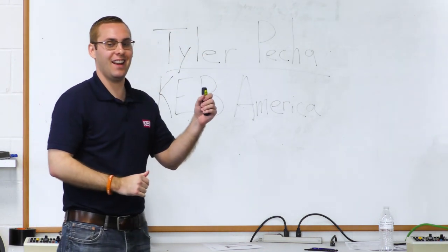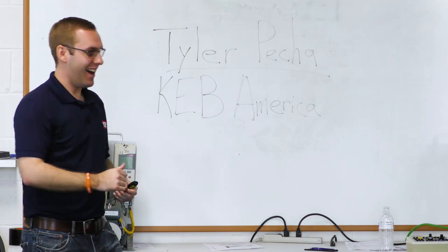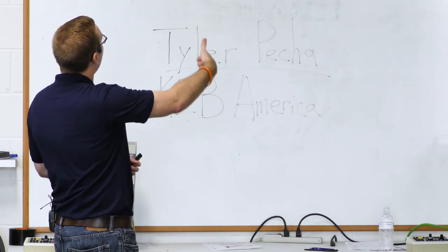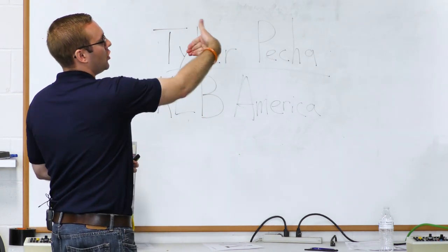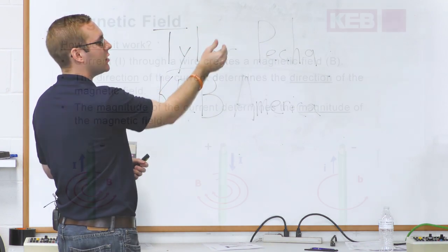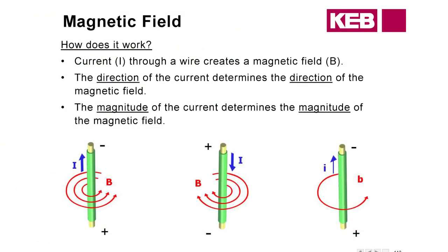If you do it with your left hand, it's not going to be correct. So if the current is moving in the up direction, you curl it around, you can see the magnetic field is curling around towards you. The magnitude of the current is going to dictate the magnitude of your magnetic field — the more current you have, the stronger magnetic field you're going to have.